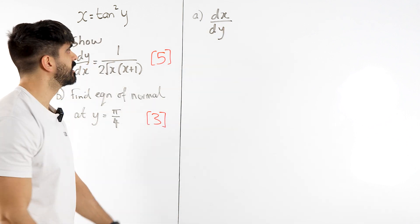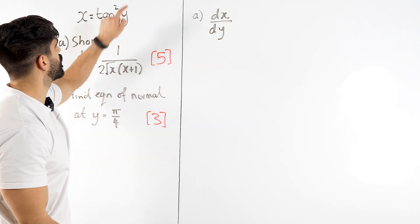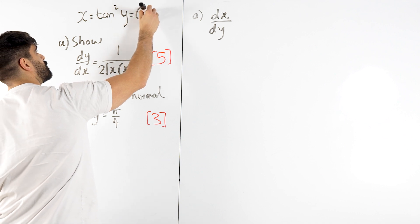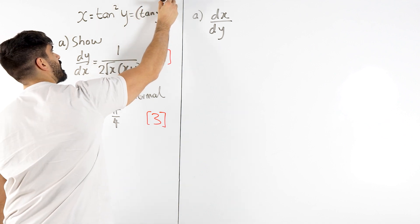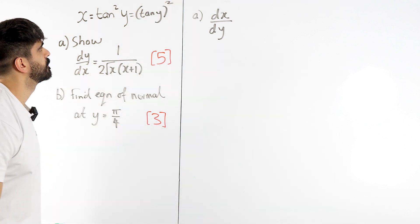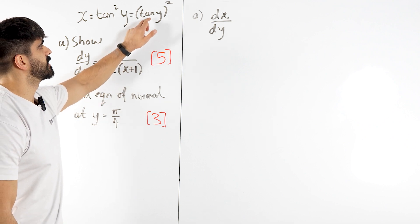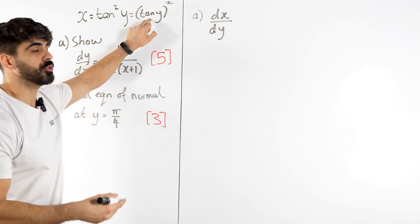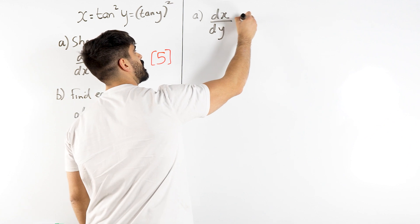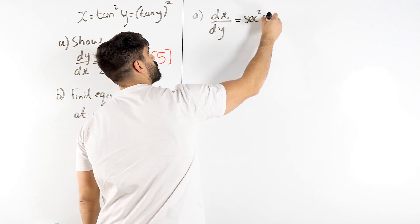But in order to do that we recognize that this is a squared, we need to rewrite it as I've shown you in many previous examples as an explicit power function. So we differentiate what's inside first, what you would have let equal u.